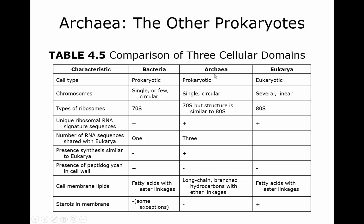Looking at the chromosomes, they can be singular or single, may have a few, but they're always circular. The ribosomes are going to be smaller than what you see in Eukarya. The ribosomal RNA sequences are all unique. The RNA sequences shared with Eukarya: Bacteria shares one, Archaea shares three. For peptidoglycan in the cell wall: Bacteria has a large amount, Archaea has none, and Eukarya has none as well.